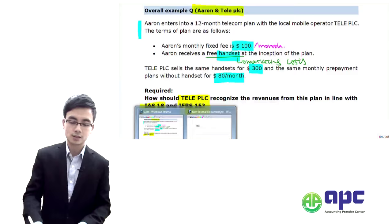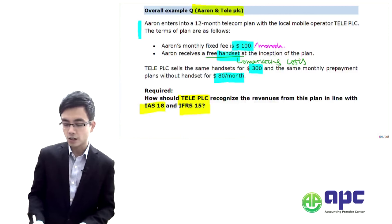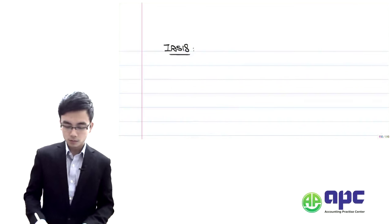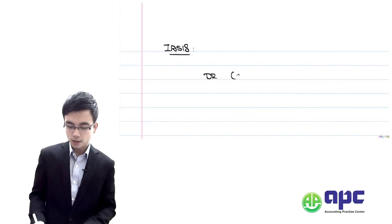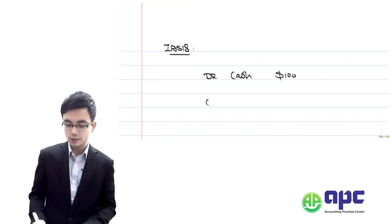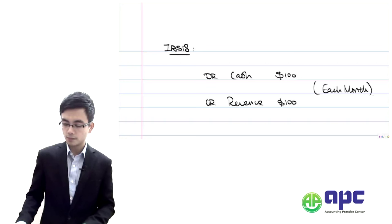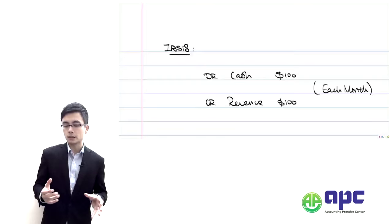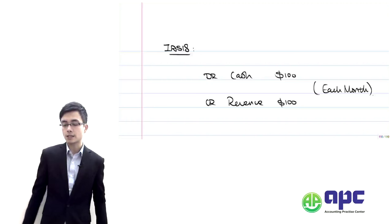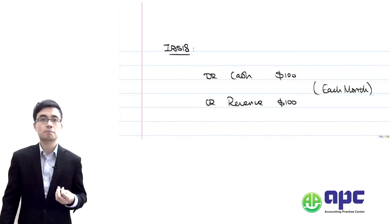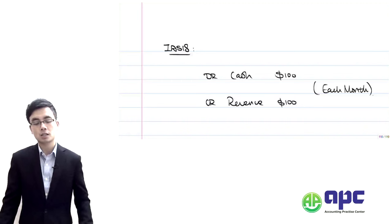What IFRS number 18 actually does is this: if you pay $100 per month, we debit cash of $100 and credit revenue of $100 for each month. As Tele-POC has received the money from Errant, we debit the cash and credit the revenue. Job done. That's for IFRS number 18.